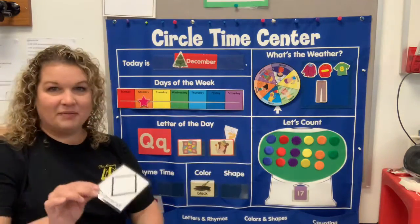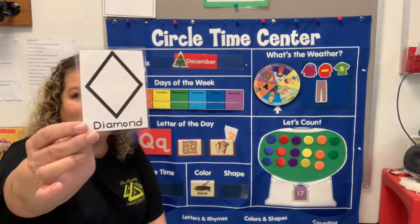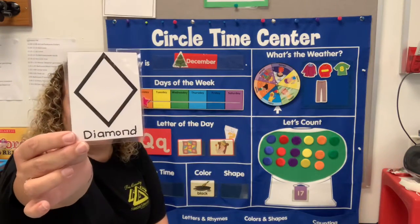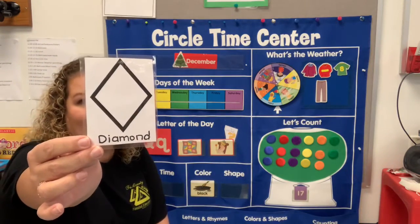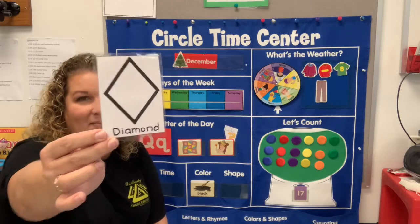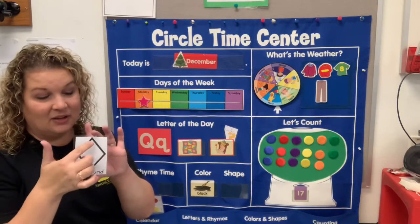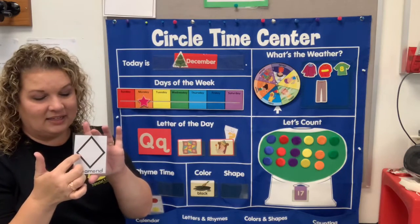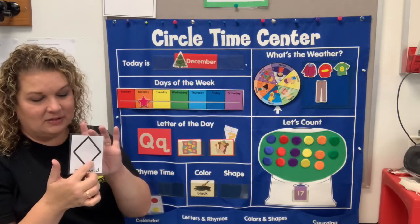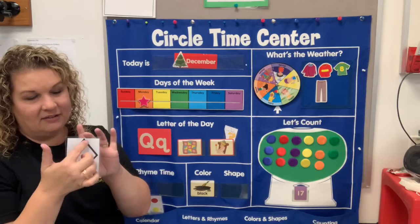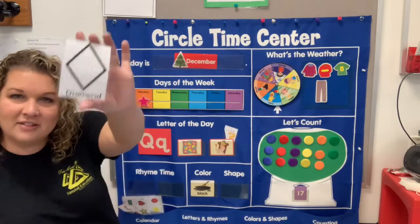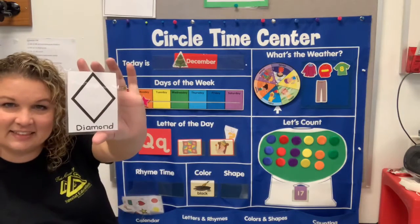Who knows what shape this is? That's a diamond, and it has four sides — one, two, three, four. And it looks like a kite.